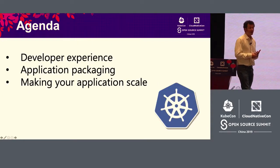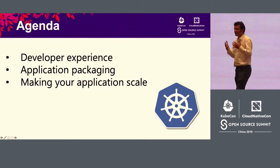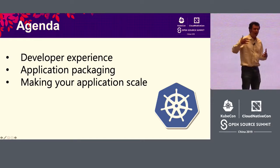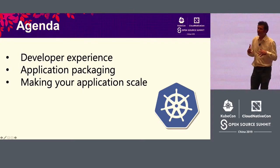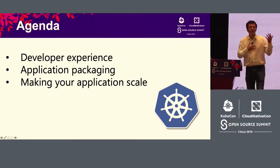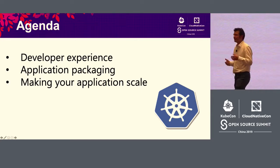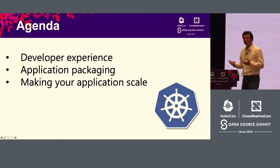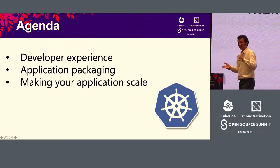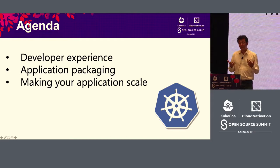Today we're going to talk about one big topic: over the past few years, people have been using Docker and then Kubernetes to build cloud native applications. But nowadays, these applications are becoming more complex — typically built with three components: containers, serverless functions that respond to events, and managed cloud services. We'll cover the developer experience for that, how you package your application, and how you make it scale.